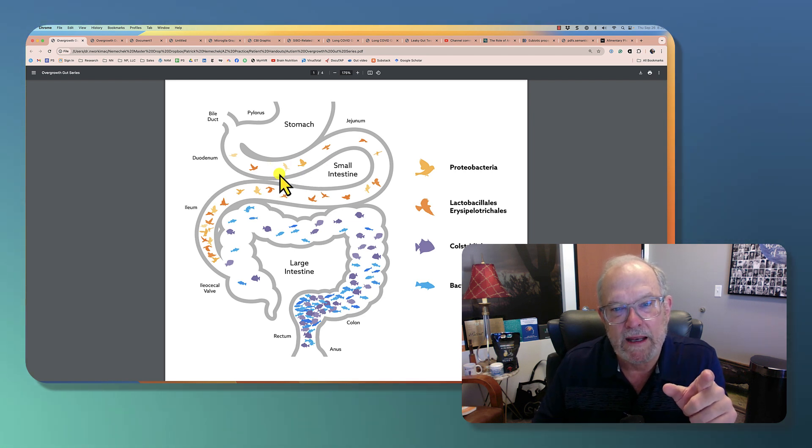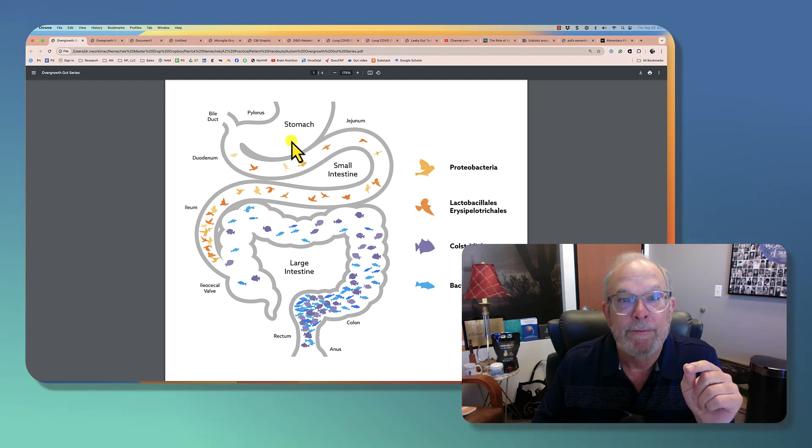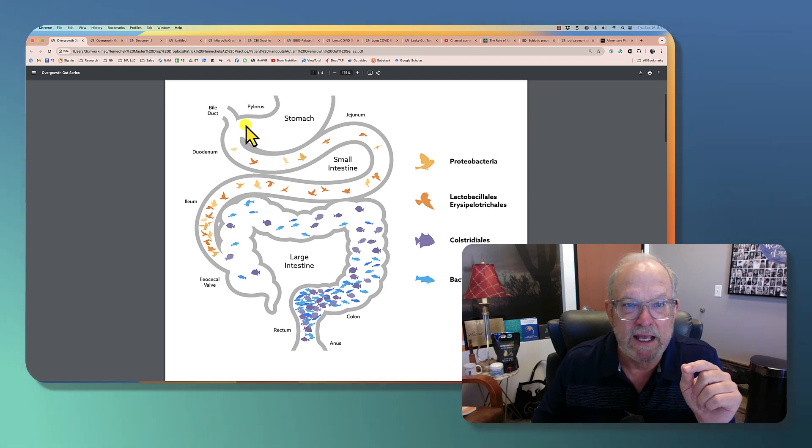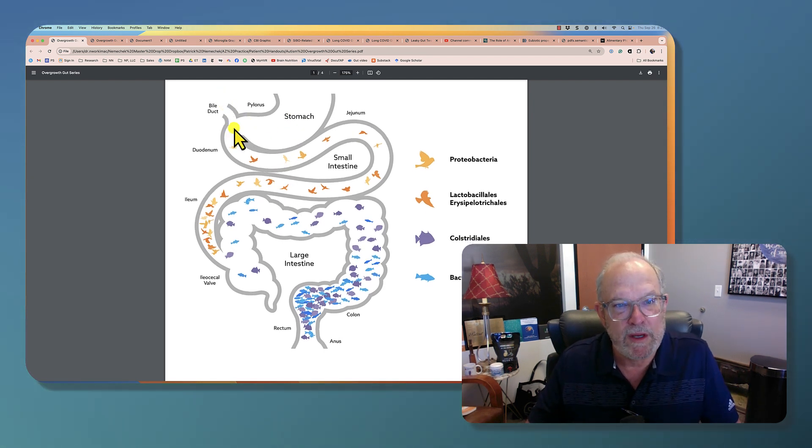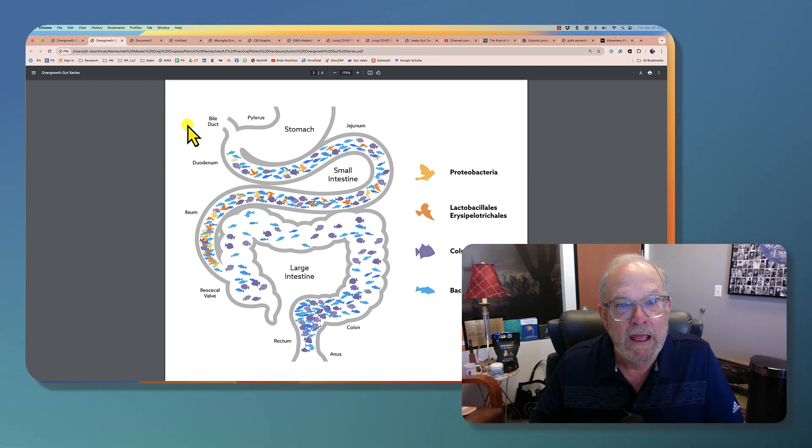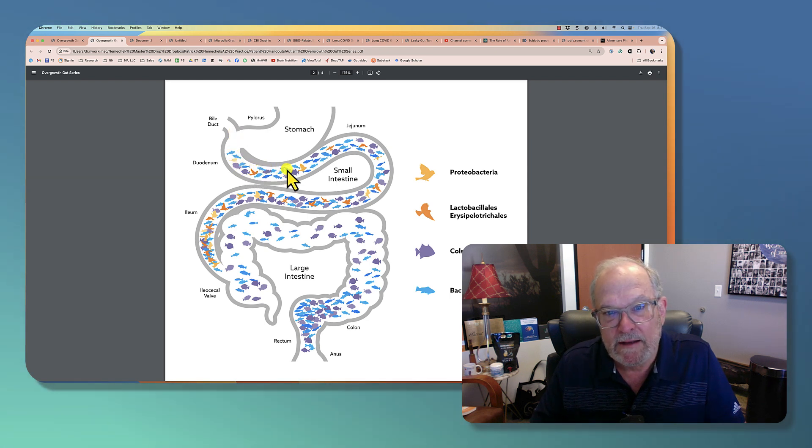And the reason for that is Rifaximin needs bile to be active. So you swallow the pills, comes in, and now you're having bile dripping in here, it will combine with Rifaximin. Now it will kill off the colon bacteria here, the fish. It's not gonna harm the birds. It leaves the birds behind.